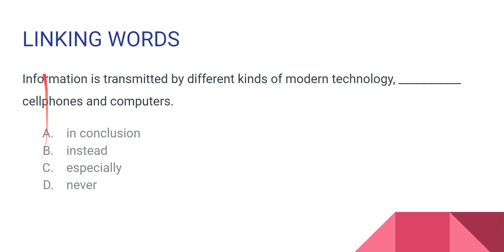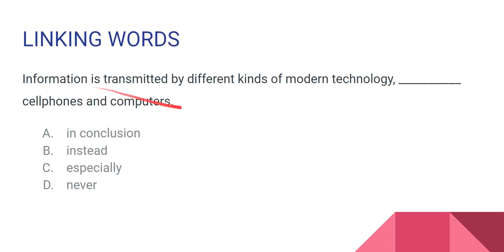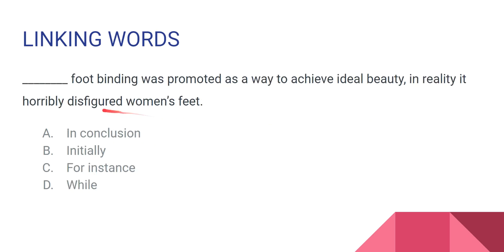The information is transmitted by different kinds of modern technology, especially cell phones and computers. So 'especially' is the correct linking word here, as it introduces a specific example within a broader category. This is how you join two ideas together using linking words.